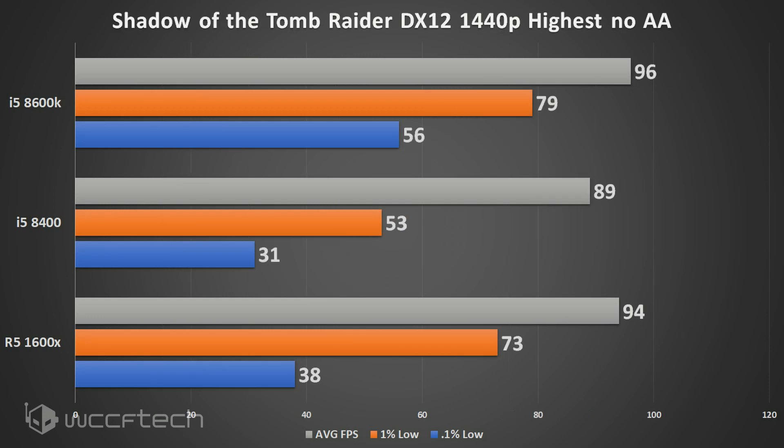Moving on to Shadow of the Tomb Raider, we see the 1600X and the 8600K coming very close to each other on averages, but the 0.1% lows definitely benefit from the higher core frequency of the 8600K. The 8400 is left in the dust by these two chips in this game.